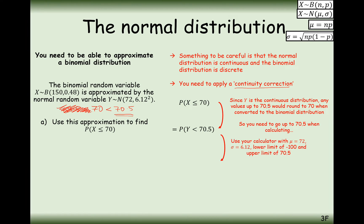On the calculator, go to normal CD mode, enter mean 72, standard deviation 6.12, lower limit −999, upper limit 70.5. You get an answer of 0.4032. Try that on your calculator to make sure we're on the right page.